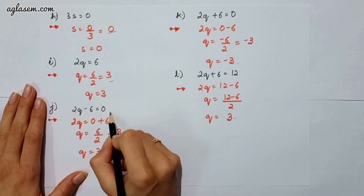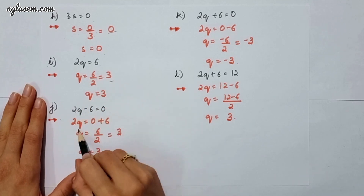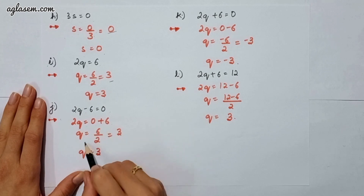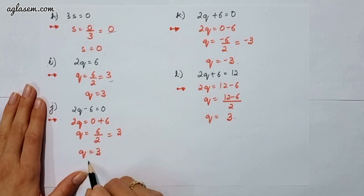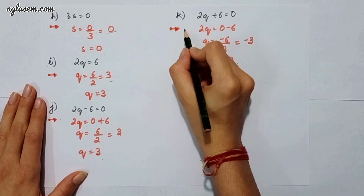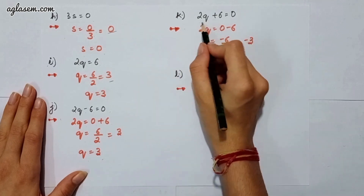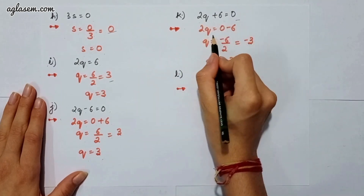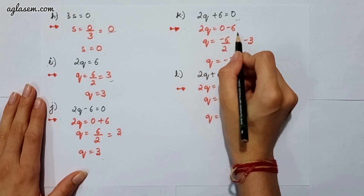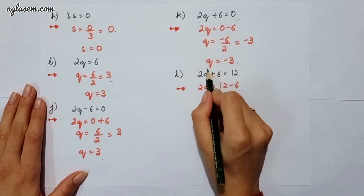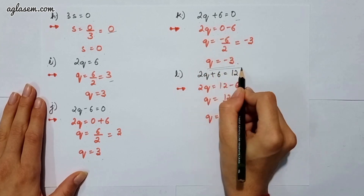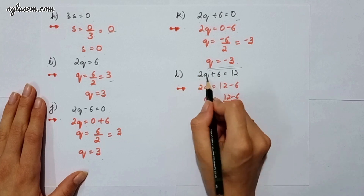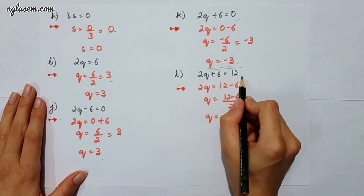The j part says 2q minus 6 is equal to 0. So 2q is equal to 6, which means q is equal to 3. The k part says 2q plus 6 is equal to 0. So 2q is equal to minus 6, therefore q will be minus 3.